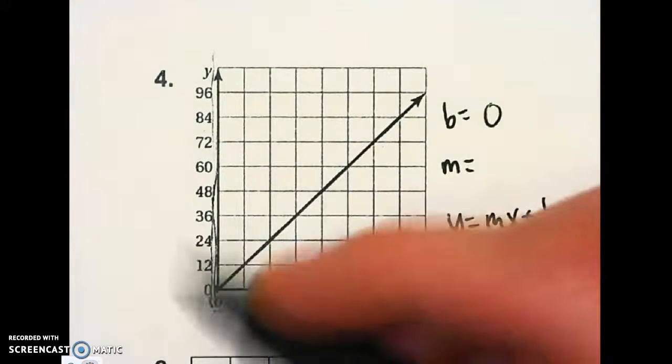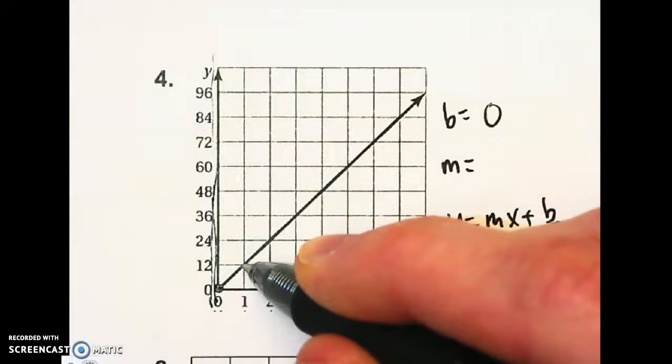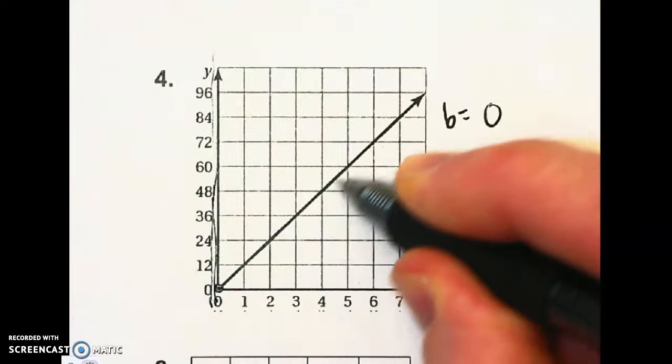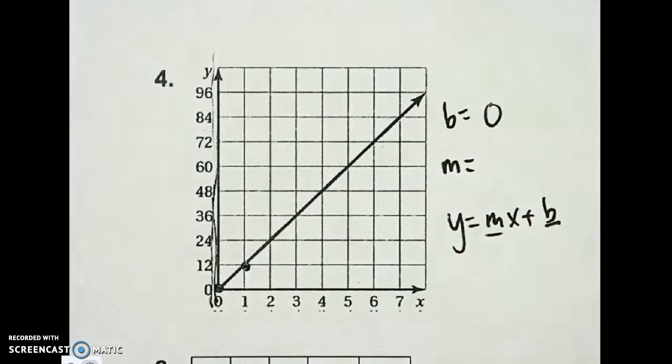You need to pick a spot on the graph where you can make a triangle. Looks like I can pick this spot, and this also crosses at a grid crossing. All of these cross, actually, so I'm just going to pick the smallest one I can, so I don't have to reduce my fraction.